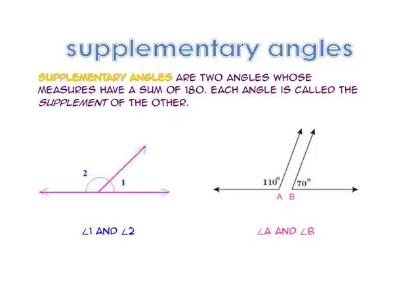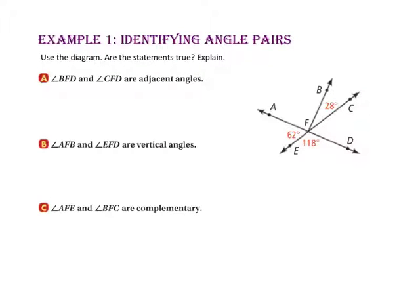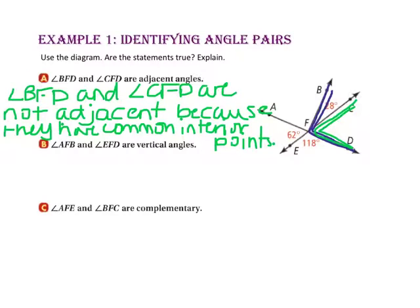In Example 1 part A, let's use the diagram to tell if angle BFD and angle CFD are adjacent angles. Even though the two angles share a common side and a common vertex, the interior points of angle CFD are also interior points of angle BFD. So these two angles are not adjacent.